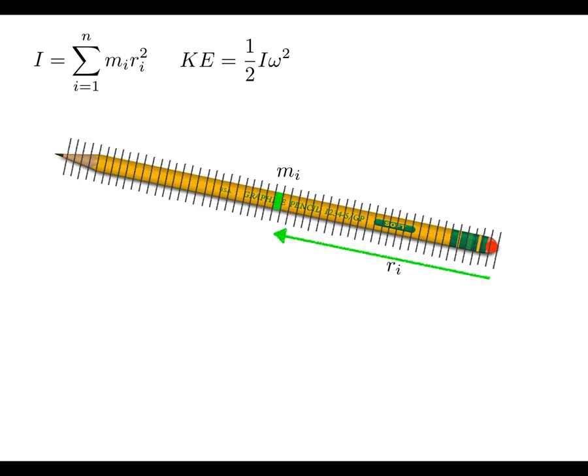And if I look at all the mass, the little bits of mass, and figure out how far they are away from the eraser, I can—for each m sub i I'll get a m_i r_i squared—I can add all of those together and that's going to give me the rotational inertia of the pencil.